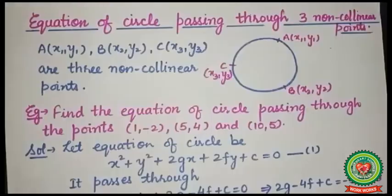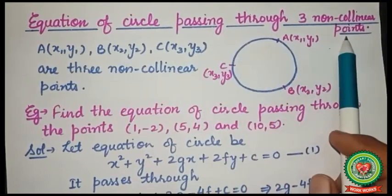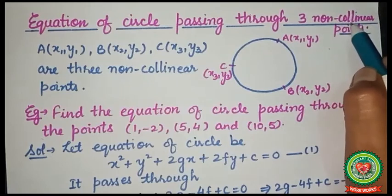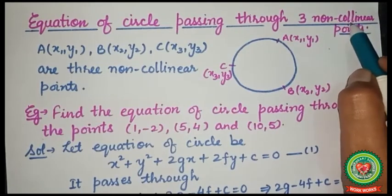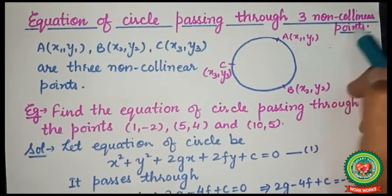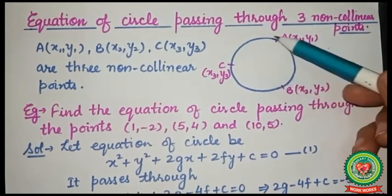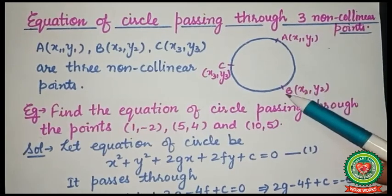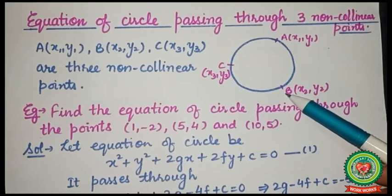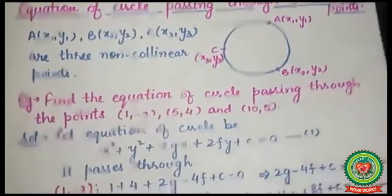The fifth objective is the equation of a circle passing through three non-collinear points. Non-collinear means the points are not lying on one line. For example, points A, B, and C not lying on one line are called non-collinear points. Instead of a center or radius, three non-collinear points are given and we have to find the circle's equation.